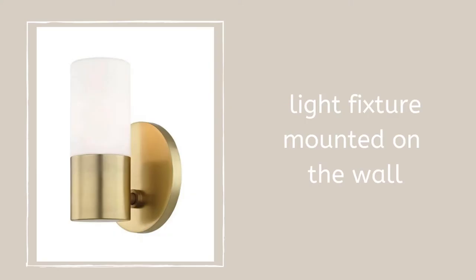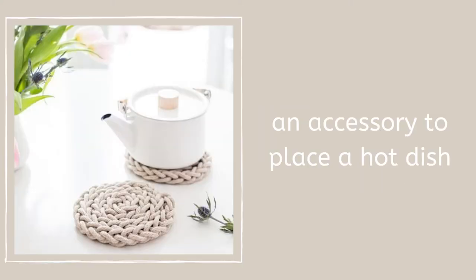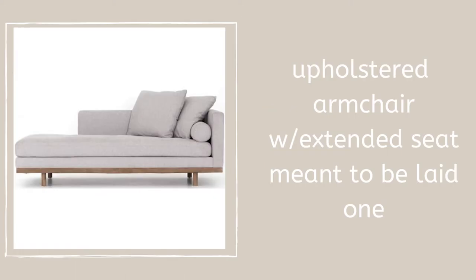Let's get started. Starting with a sconce — it is a light fixture mounted on the wall. A trivet is an accessory to place a hot dish to protect your table or countertops from burning. A chaise lounge is an upholstered armchair with an extended seat.